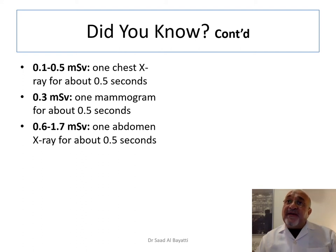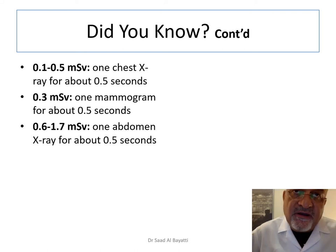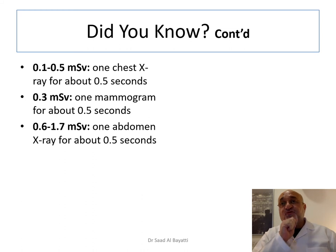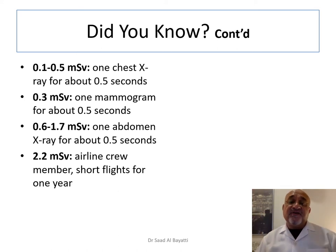One abdominal X-ray, again for about 0.5 seconds, gives a dose of 0.6 to 1.7 millisieverts depending on the exposure and the patient's body thickness — obese patients will increase the required dose. For airline crew members on short flights going up and down throughout the year, they will receive 2.2 millisieverts for the same reason — higher altitude exposure.